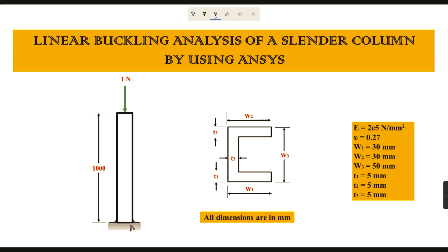One end is fixed and the other end has an axial load applied vertically. The load given is one newton, which is taken as a dummy load. When load is applied at the top, the entire slender column should get buckled. The failure happens due to buckling.